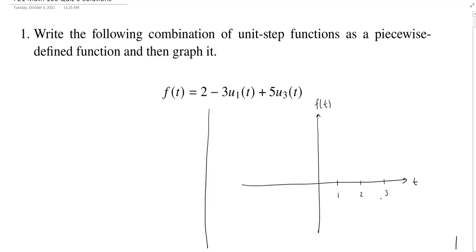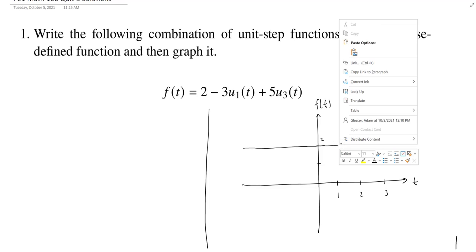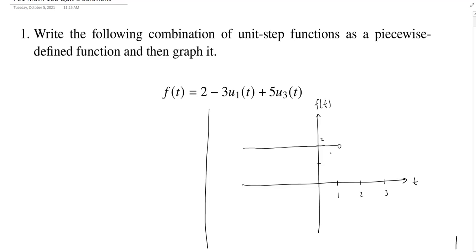So at 1, something is going to happen. But before 1, it's just going to be at height 2. There's maybe a 2 right there. And so I just get a nice, flat, constant line all the way up until 1. And then something is going to change. So I'm going to put a nice circle. And I'll use a little arrow on the left here to denote it going off to negative infinity.